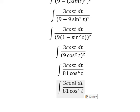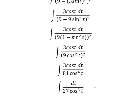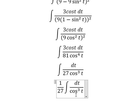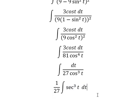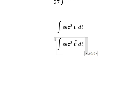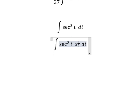We need to simplify by cancelling 3 cos(t) from numerator and denominator, so I will put number 27 outside. This gives us secant of t to the power of 3. Now I will concentrate on sec³(t) — we can write this as sec²(t) multiplied by sec(t).